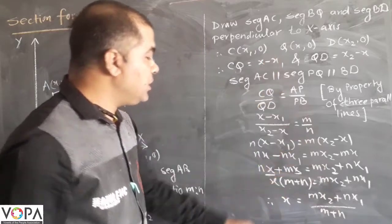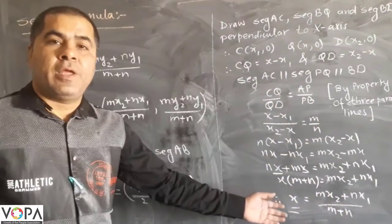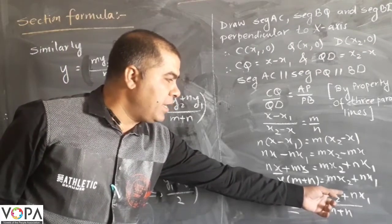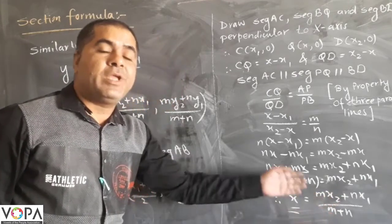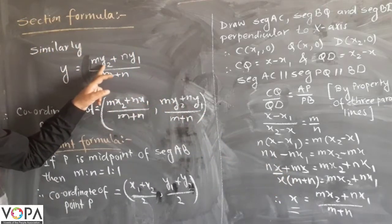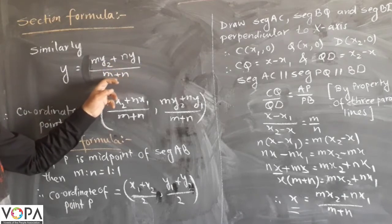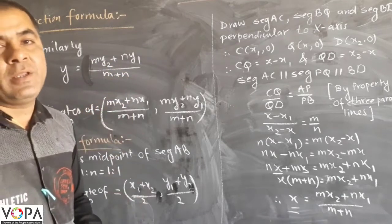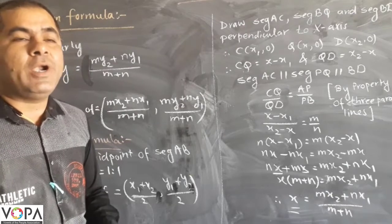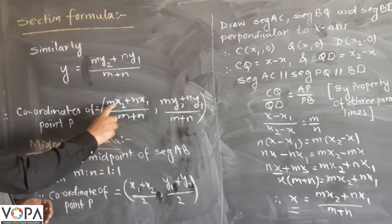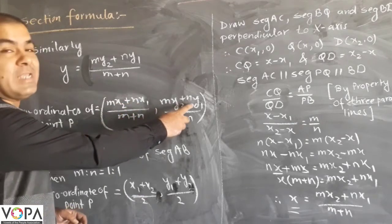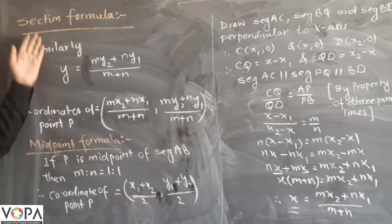And now this is the X coordinate. Similarly, as we have found the X coordinate of point P is MX2 plus NX1 upon M plus N, we can find the Y coordinate of P that will be Y equal to MY2 plus NY1 upon M plus N. This is the section formula.